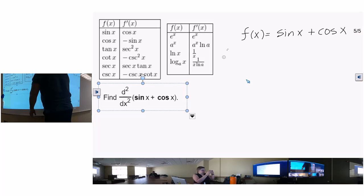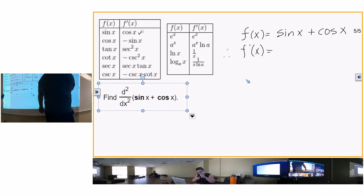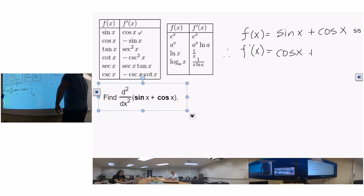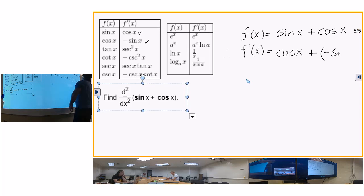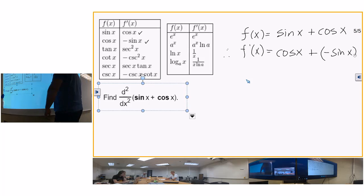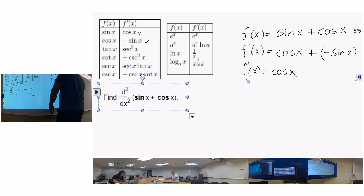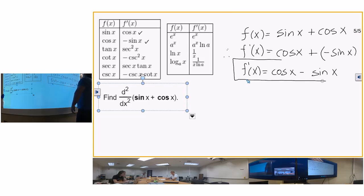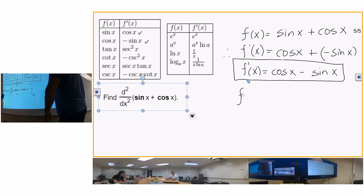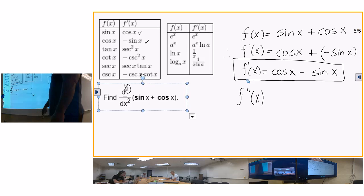Therefore, f prime of x - what is the derivative of the sine of x? Cosine of x. What is the derivative of the cosine of x? Negative sine of x. So f prime of x is equal to the cosine of x plus negative sine of x, or minus sine of x. So you do the next one. How do I know to do the next one? Because it says what? To evaluate the second derivative.